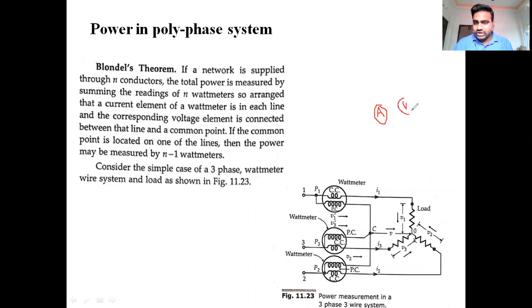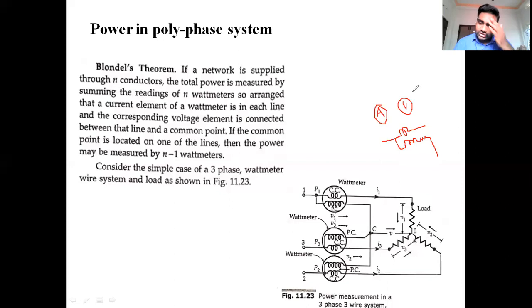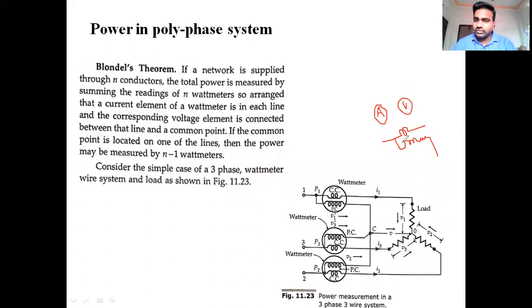In circuit representation, a voltmeter is represented like this and this is how we represent a wattmeter. The wattmeter has a current coil, a series coil connected with a resistance. In a circuit symbol, we represent the wattmeter with four terminals: M (main), ML (line), C, and V (common voltage terminal).